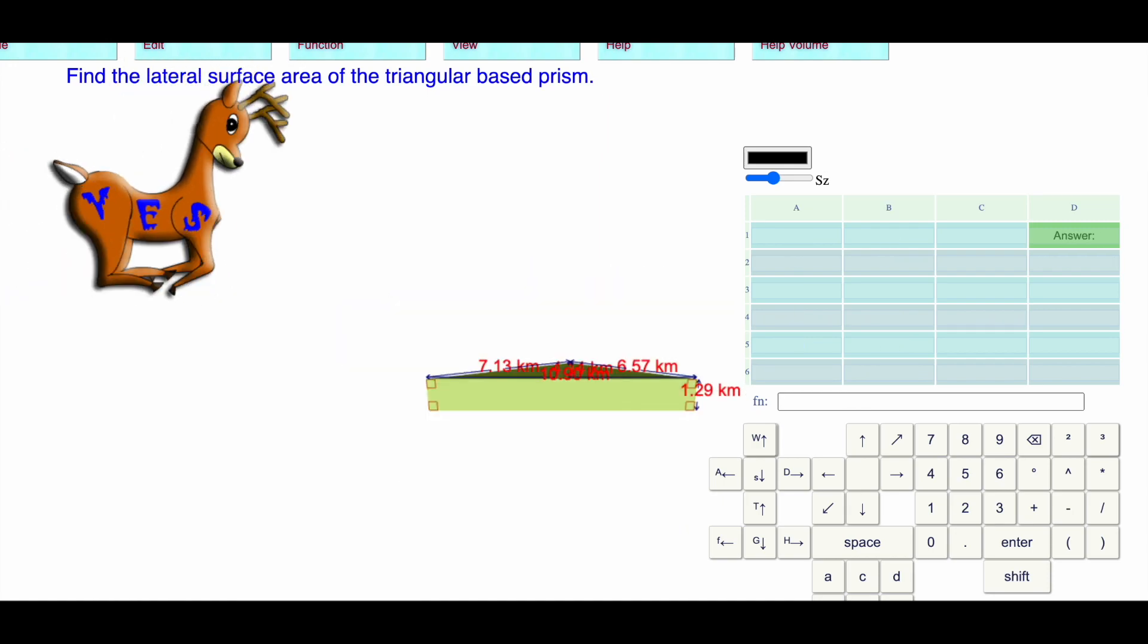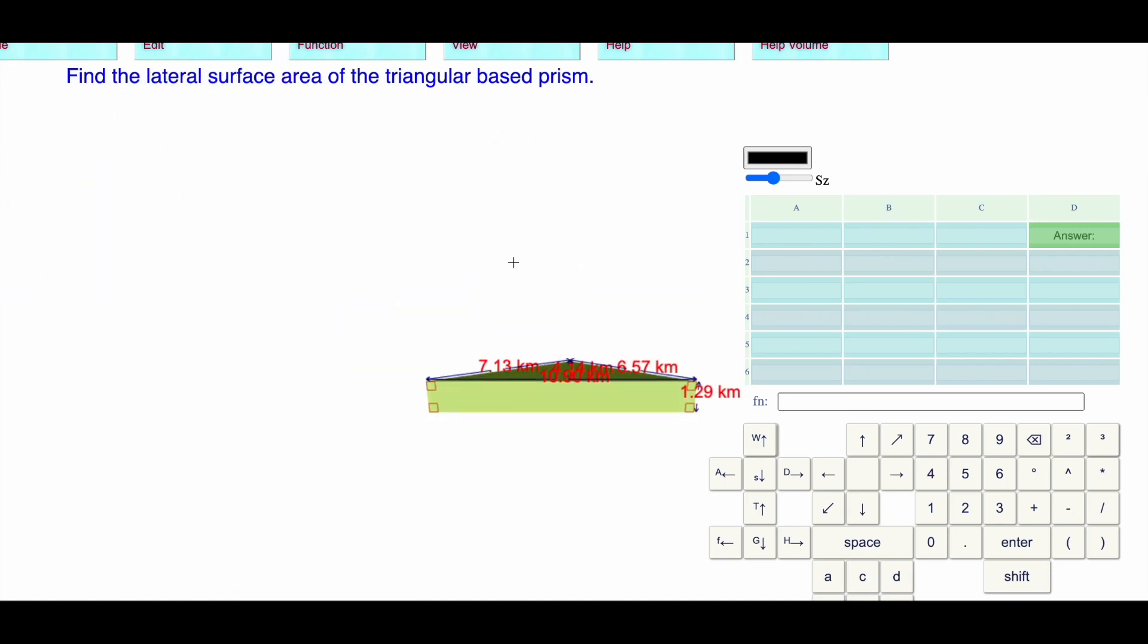And then press return to check to see if you're right. That's it for level 19, the lateral surface area of the triangular based prism. Have a good day.